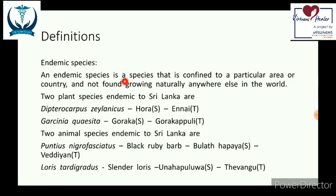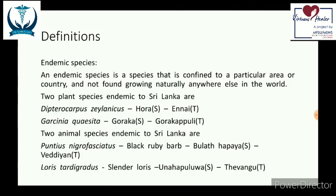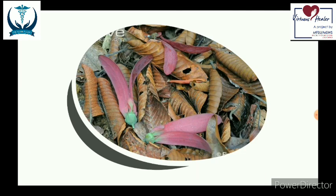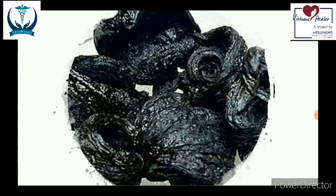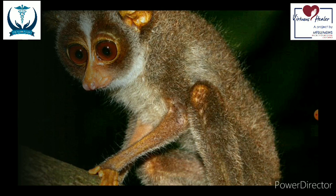Two plant species endemic to Sri Lanka are Dipterocarpus zeylanicus and Garcinia quaesita (also known as goraka). Two animal species endemic to Sri Lanka are the black ruby barb (Puntius nigrofasciatus) and the slender loris.